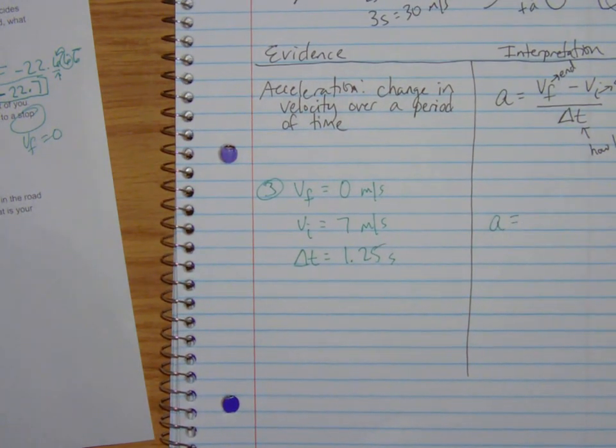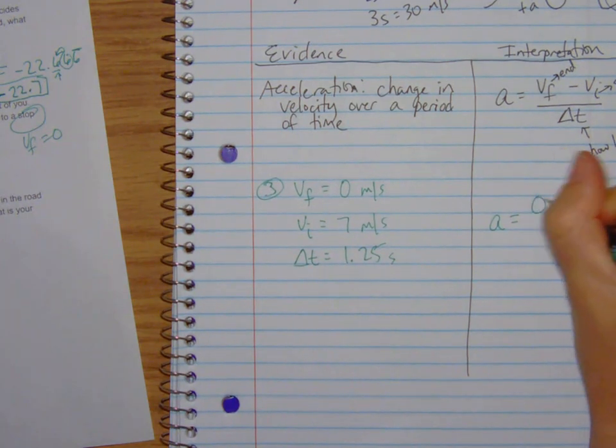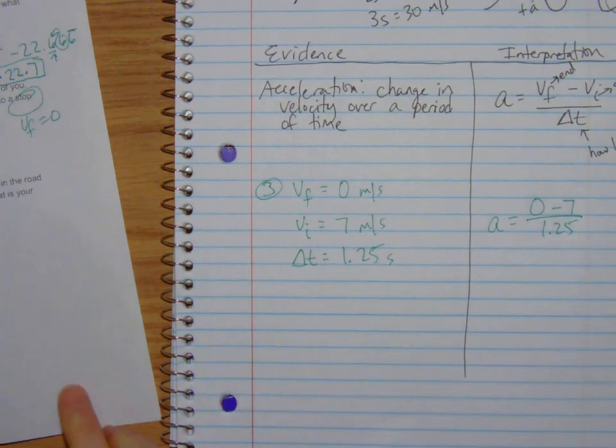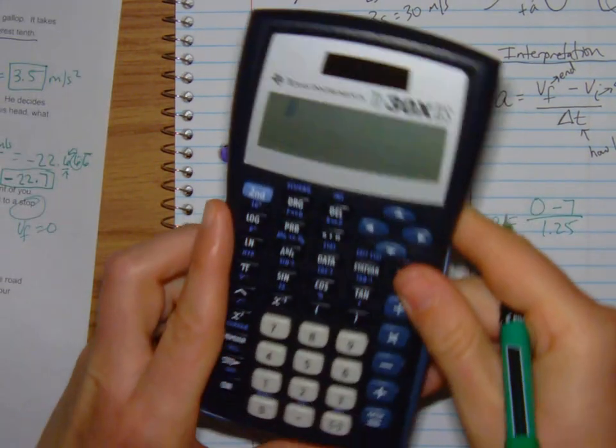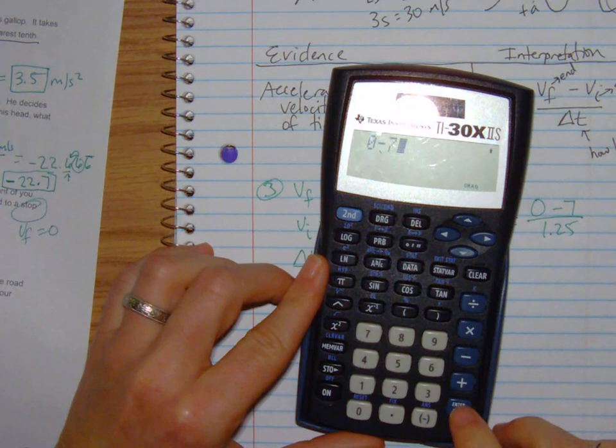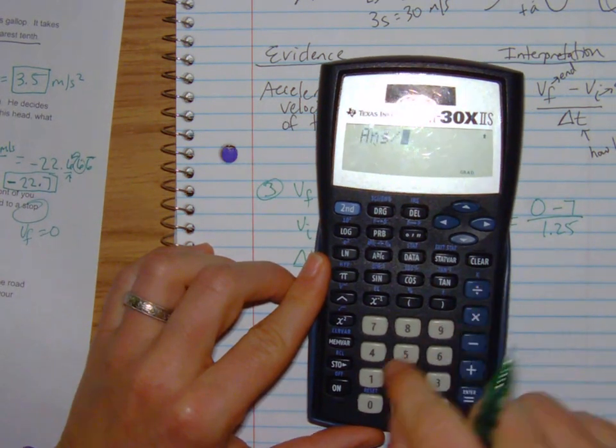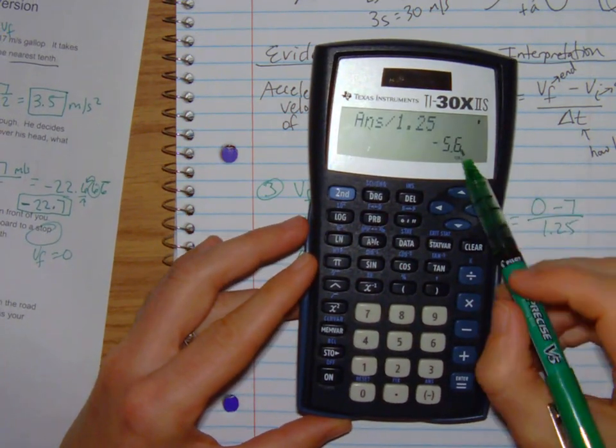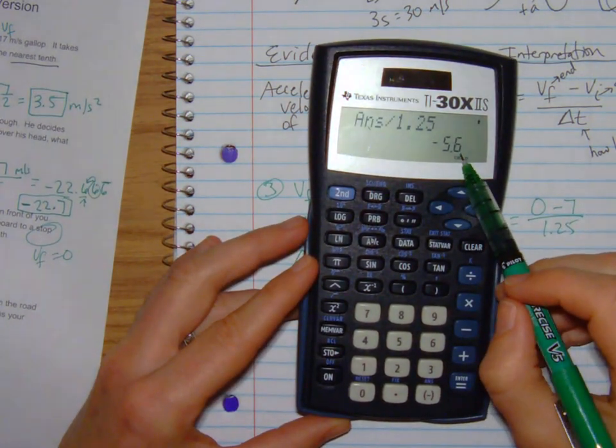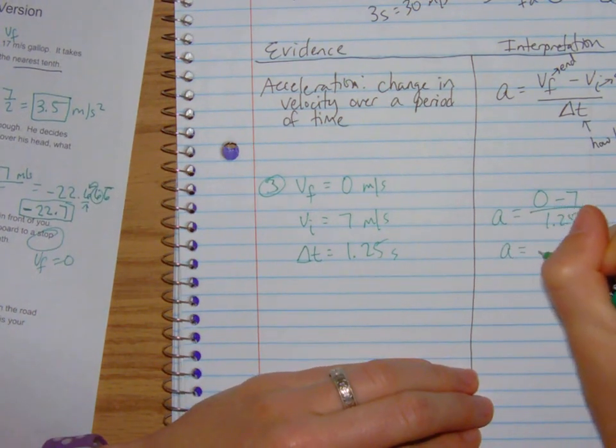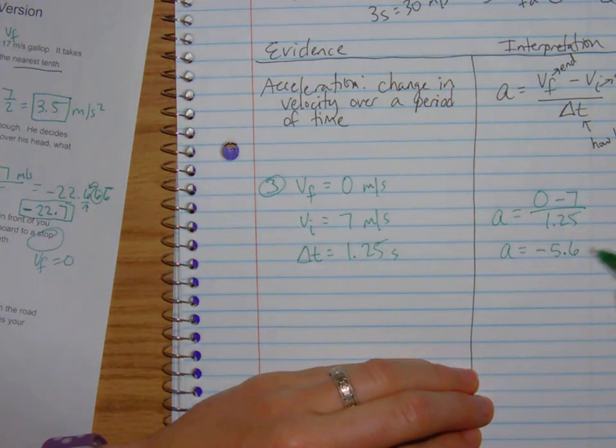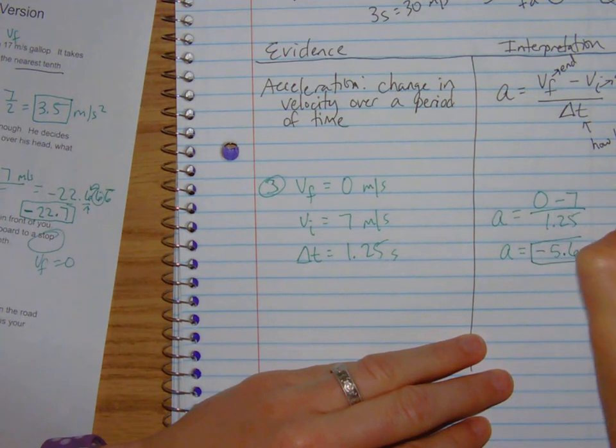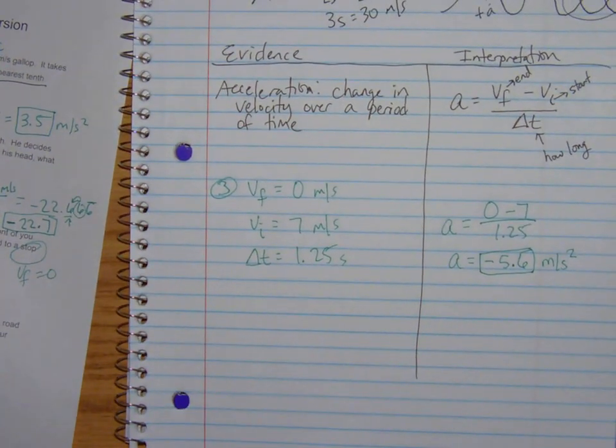Acceleration—we're slowing down, this thing needs to end up negative. So 0 minus 7 divided by 1.25. We're going to go 0 minus 7, hit enter, divide it by 1.25, and we get something pretty. Don't have to worry about the rounding, it's already just to the tenth. So your acceleration is negative 5.6 meters per second squared, but again all you would do is type in the negative 5.6.